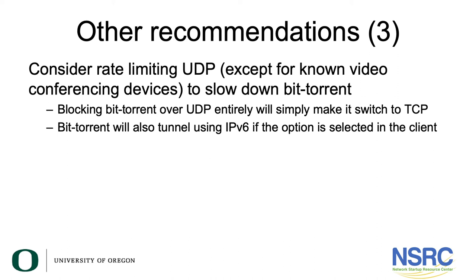In fact, if you try to block it at the TCP level as well, BitTorrent will try to tunnel using IPv6 if that option is selected on the client. So rate limiting UDP is quite commonly implemented on many campus networks, and that limits the impact that BitTorrent can have on the infrastructure.